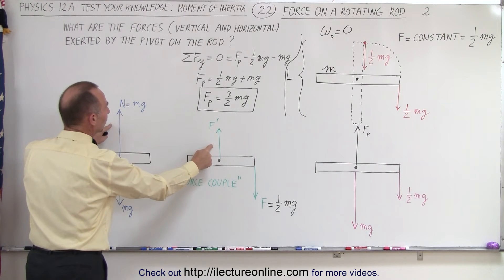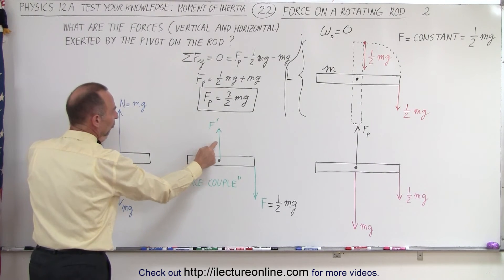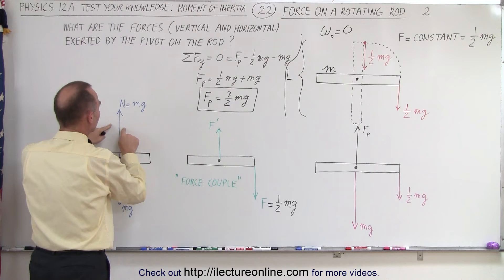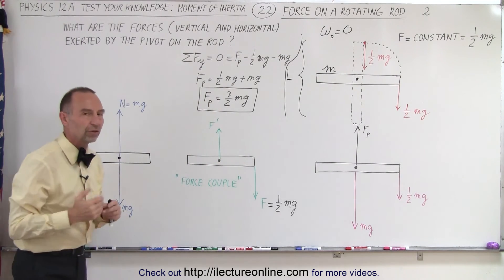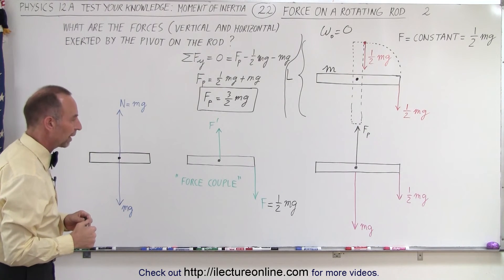So then when we add these two together, this force part of the force couple, plus the opposing force of the weight of gravity, when we add them together, we then get the total force on the pin in the vertical direction.